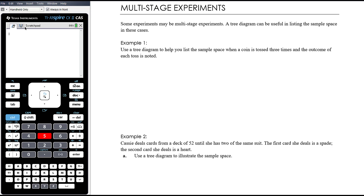Sometimes we have probability experiments where there are multiple stages to the situation. Generally speaking, where we've got multiple stages, a tree diagram is going to be the best way to represent what's happening, and sometimes it's about thinking carefully about the best way to construct the tree diagram.